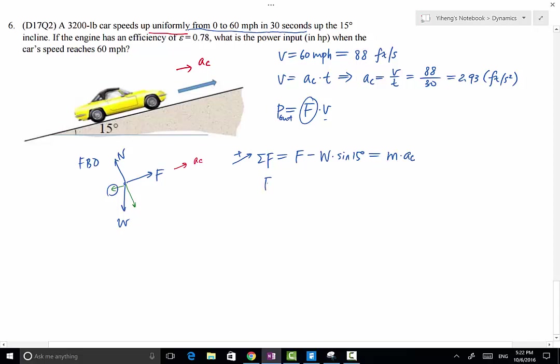So F minus 3200 times sine 15 degrees equals the mass of the car, 3200 pounds divided by 32.2, the gravitational acceleration in the foot-second unit system, times the constant acceleration of 2.93 foot per second squared. So from here, we only have one unknown in this equation, and that is F. And F can be determined to be 1100 pound force.